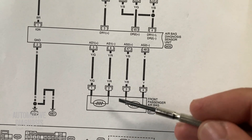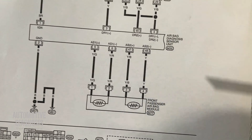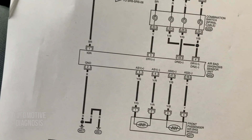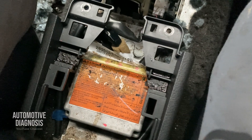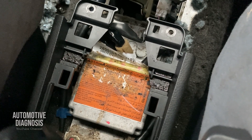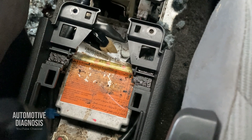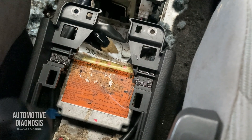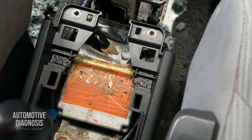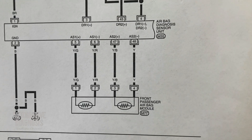Here is the airbag control module under the center console for this car. Most of the time, the location of the airbag control module is under the center console.